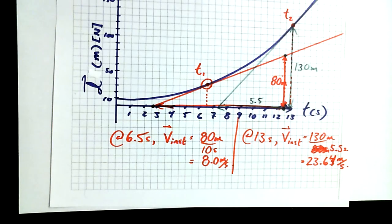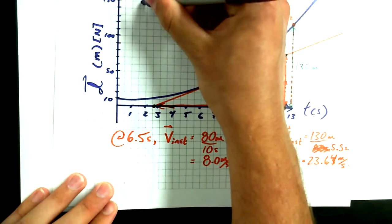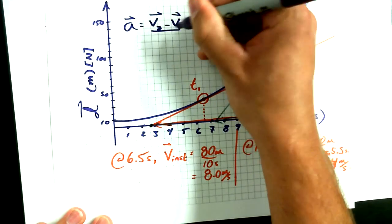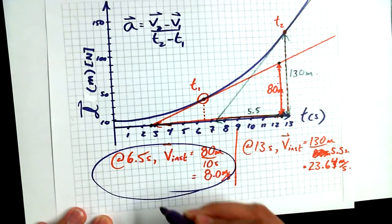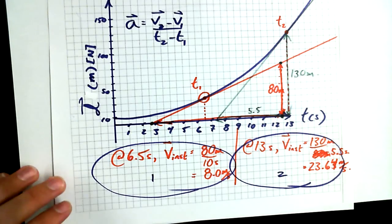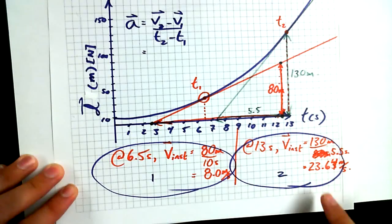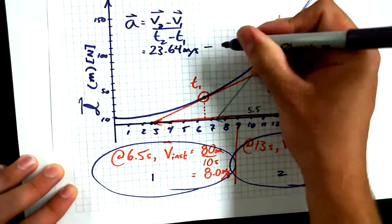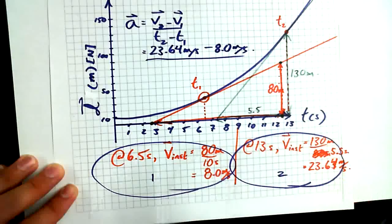Now here's the real sweetheart of this whole situation. Now that I found the instantaneous velocity at 6.5 seconds and at 13 seconds, we can find acceleration using the acceleration equation: a = (V2 − V1) / (T2 − T1). V2 was 23.64 meters per second, minus V1 which was 8 meters per second, all over 13 minus 6.5.